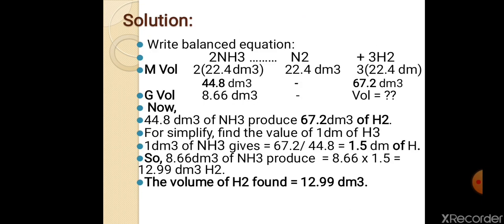Moving toward the equation — first, write the balanced chemical equation: 2 moles of ammonia upon dissociation gives 1 mole of nitrogen and 3 moles of hydrogen.